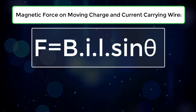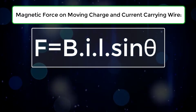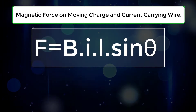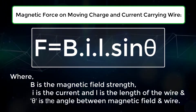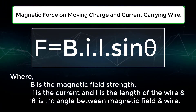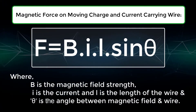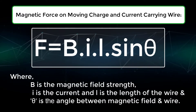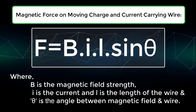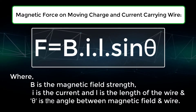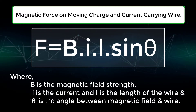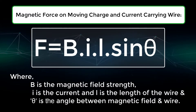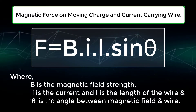Experiments done on this subject show that we can find the force exerted on a current carrying wire with the following formula: F is equal to BIL sin theta, where B is the magnetic field strength, I is the current, L is the length of the wire, and theta is the angle between the magnetic field and the wire.